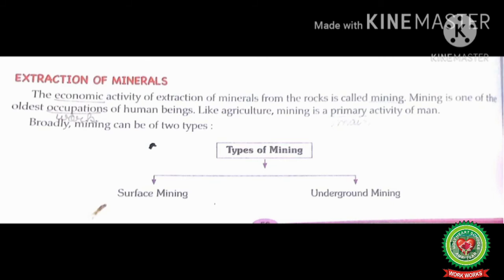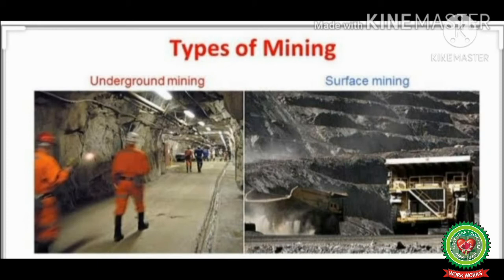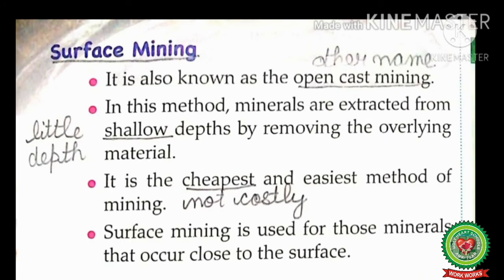Like agriculture, mining is a primary — meaning main — activity of man. Broadly, mining can be of two types: Number one, surface mining, and Number two, underground mining. Now take out page number 57 of your book.